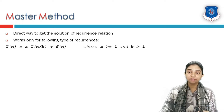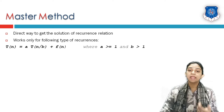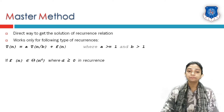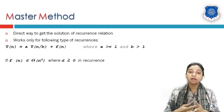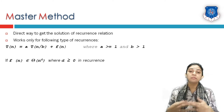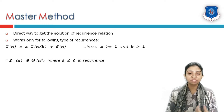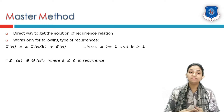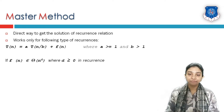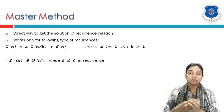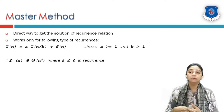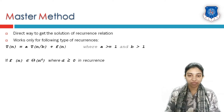In this form there are three cases. First, f(n) is a polynomial with highest degree d, so we say f(n) is in big-Theta of n raised to d, where d is the power of n and is always greater than or equal to 0 in a recurrence equation.